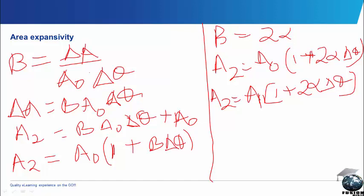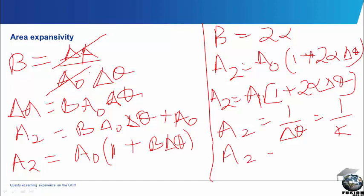Considering the units of area expansivity, also from the formula meter square will go with meter square, remaining only change in temperature. So in terms of units, this is 1 over change in temperature, which is equal to 1 over Kelvin. That means the unit will be given to us as also per Kelvin, the same thing as linear expansivity.